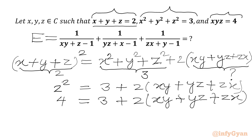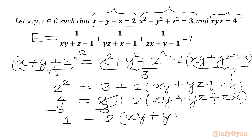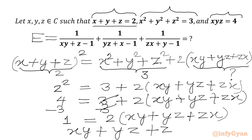Now we subtract 3 from both sides: 4 minus 3 will be 1, and plus 3 minus 3 will be 0. So we have 1 equals 2 times xy plus yz plus zx. Dividing both sides by 2, the value of xy plus yz plus zx equals 1 over 2. We will call this equation number 1.